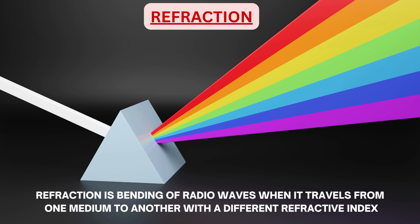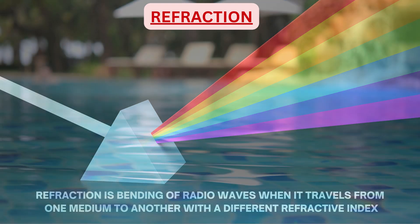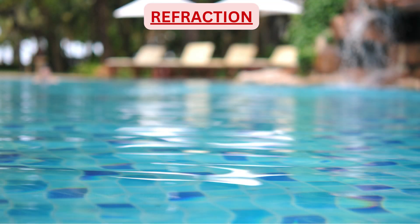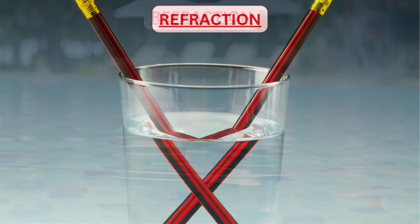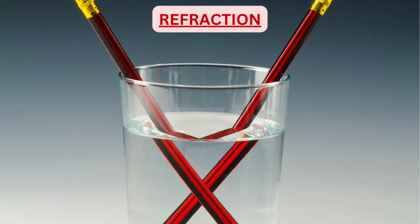Refraction is the bending of radio waves when they travel from one medium to another with a different refractive index. Examples of refraction are plenty in day-to-day life: a swimming pool's depth appears shallow, and a pen or pencil in a glass appears bent — all due to refraction of light waves.